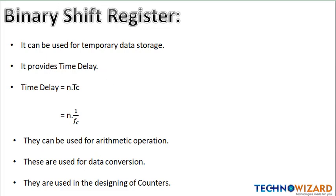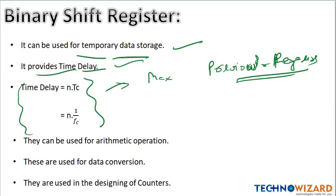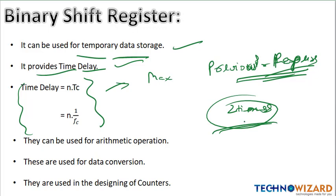Binary shift registers are used for temporary data storage and provide time delay to the system. This formula has appeared in maximum questions in ISRO previous year papers, so please analyze your previous year papers — they are very important as they build your confidence. Revise your previous year papers around two times before the exam so you know the strategy and which types of questions can come.